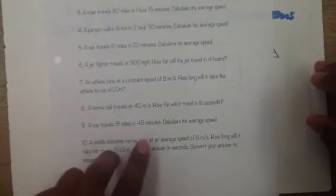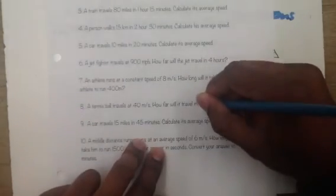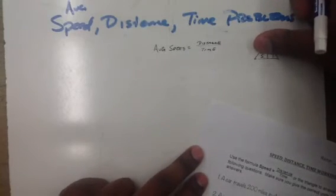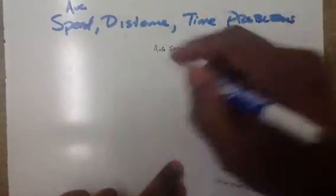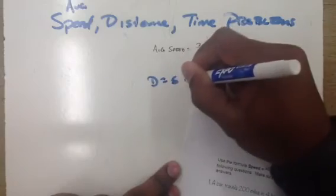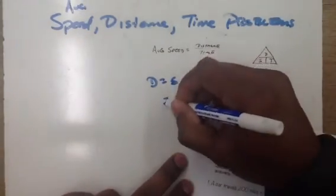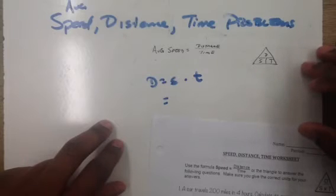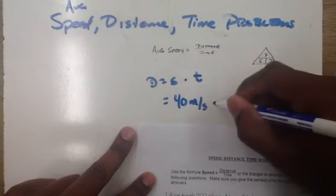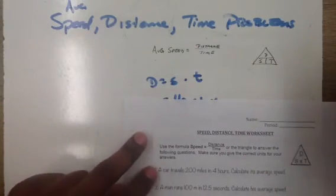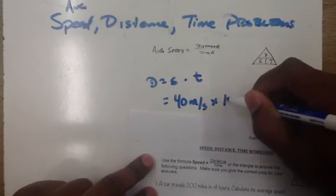It says here that a tennis ball travels 40 meters per second and wants to know how far it will travel in 10 seconds. So it's looking for distance because it's asking how far. We see that our formula for distance is going to be, we cover up the D and distance equals speed multiplied by time. So distance equals speed multiplied by the time. And then we fill in our speed, which was 40 meters per second, multiplied times the time, which was 10 seconds.